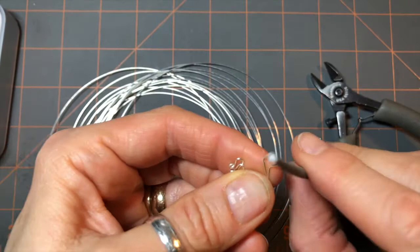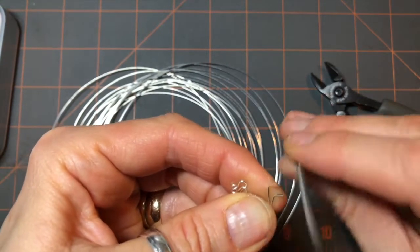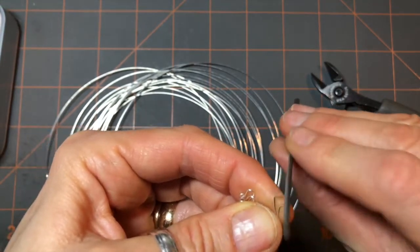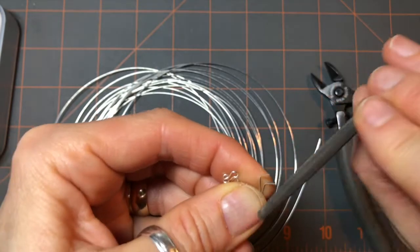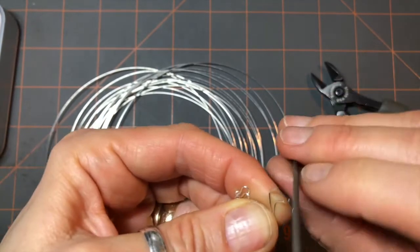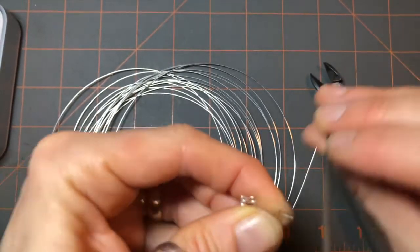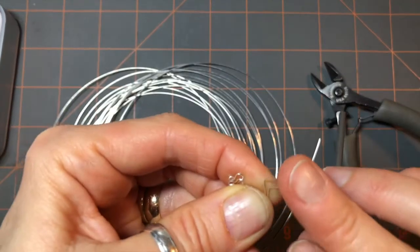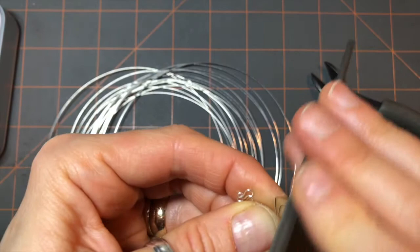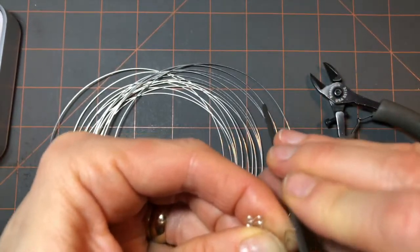So now all I have left is file the ends. You can use a nail file. This is a metal file. You can use a nail file or whatever you have. You just need to get rid of those sharp edges. So you can get your ear wires through your ears with no problems.